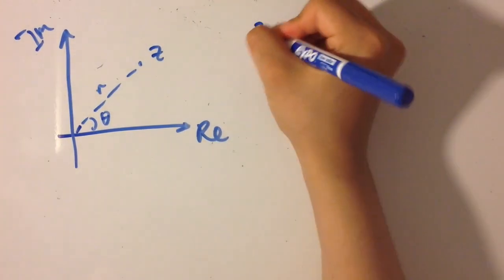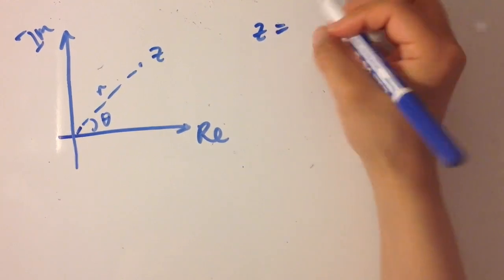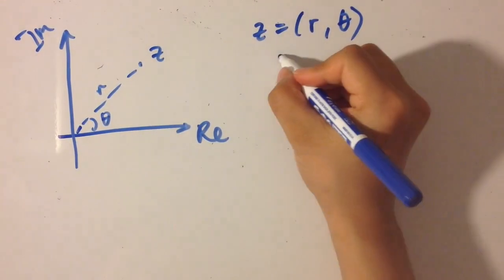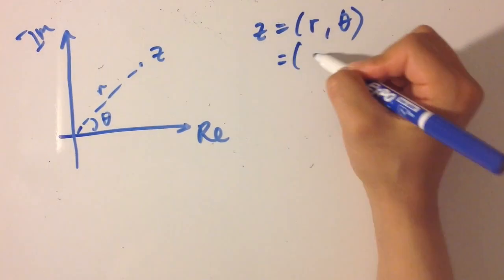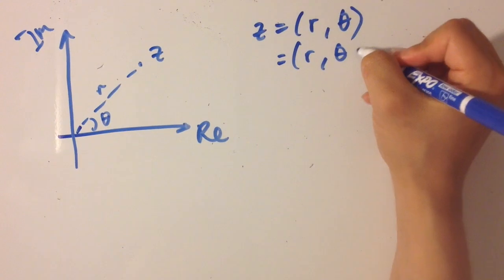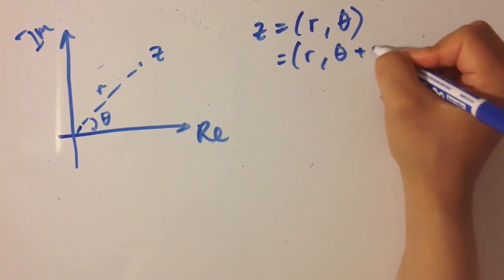Now if you were to represent z in polar coordinate form with r and theta, you would find that z at r and theta is equal to r and theta plus 2 pi.